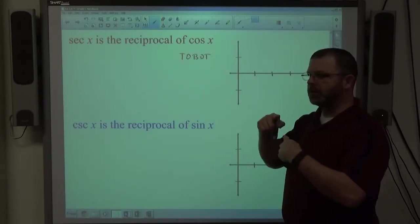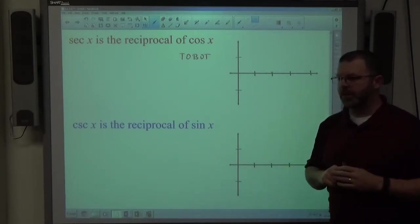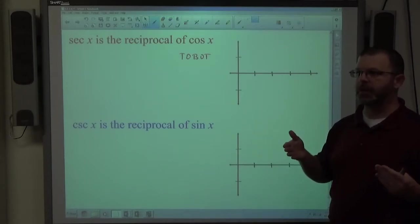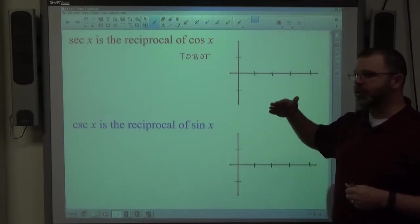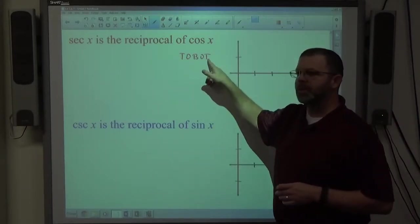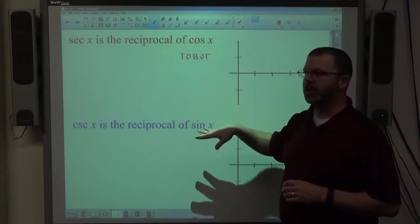The reciprocal function: the tops and the bottoms represent a value of one or negative one for the sine or cosine function. The reciprocal of one and negative one are one and negative one, so the tops and the bottoms will be the same for the secant and the cosecant graphs.